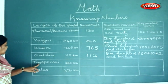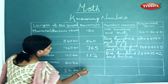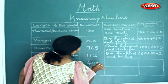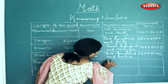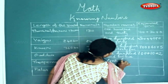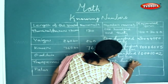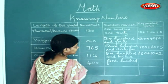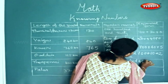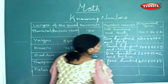Next is 400 kilometers. In numerals it would be written as 400. The number name is four hundred. And for the expanded form it will be 400 plus 0 plus 0.